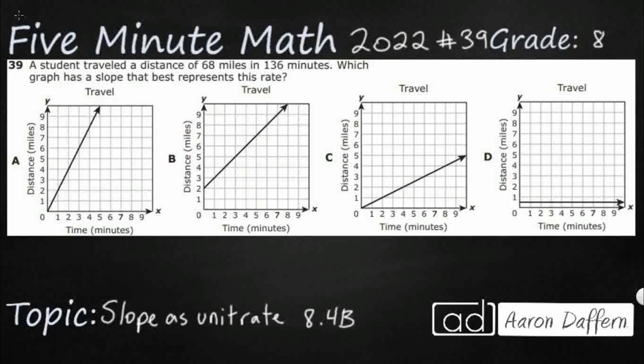This is standard 8.4b in the great state of Texas, and we are using item number 39 of the 2022 released STAR test.